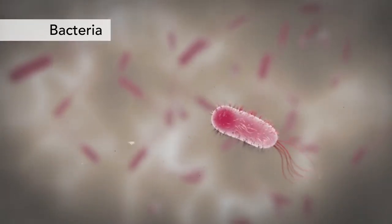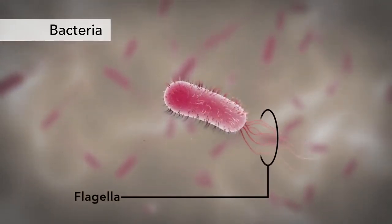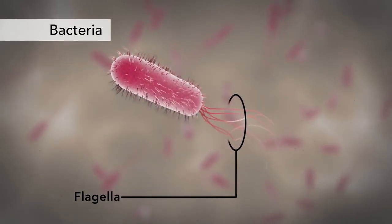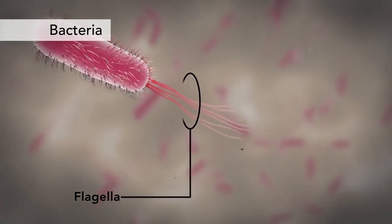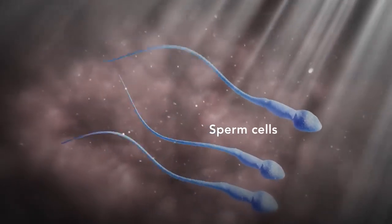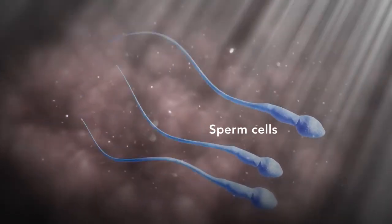Another unique feature in some cells is flagella. Some bacteria have flagella. A flagellum is like a little tail that can help a cell move or propel itself. The only human cell that has a flagellum is a sperm cell.